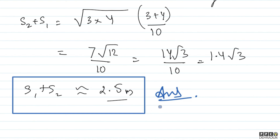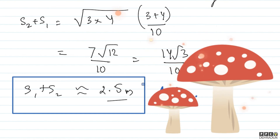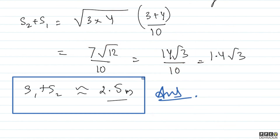So the final answer is approximately 2.5 meters — that is the separation between the two particles when their velocities become mutually perpendicular. In this problem we used two important concepts: first, the dot product of two vectors is zero when they are mutually perpendicular; and second, since both particles had the same acceleration, we used the concept of relative motion where the relative acceleration becomes zero. I hope this was clear. Feel free to contact us if you have any confusion. Take care, bye bye.